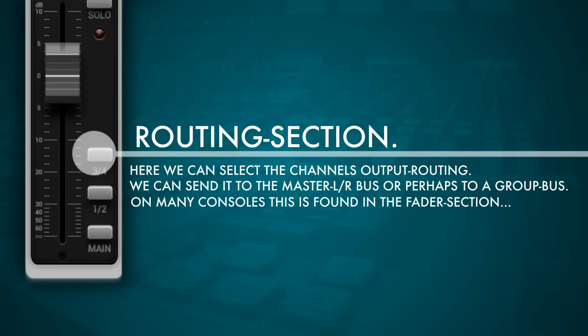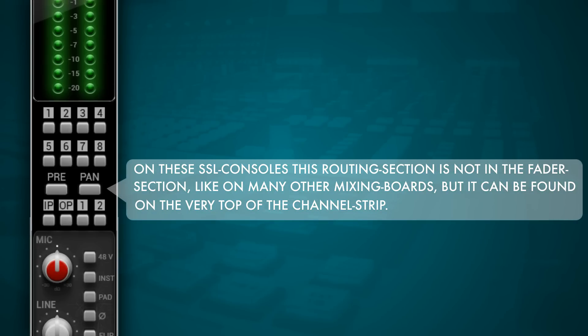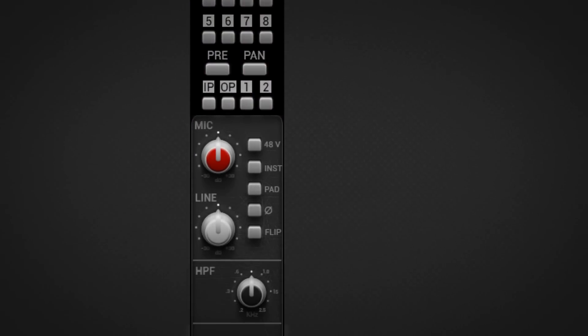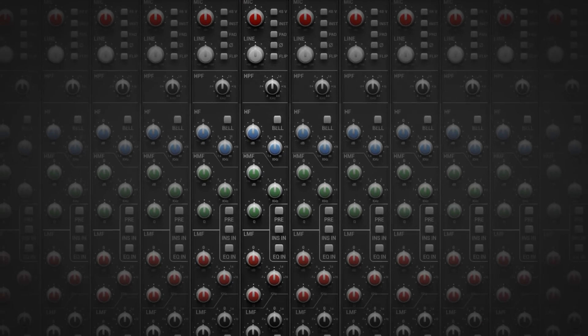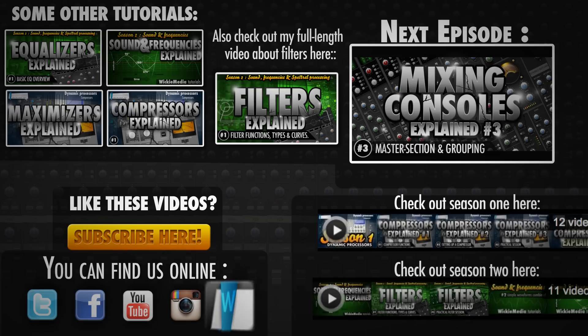In the routing section we can select which bus to send the output to after the fader — one of these being the main mix bus, which sends the output of this channel including fader and panning to the mix. On some consoles you'll also find group tracks here. On this particular SSL console, the group selection is on top of the console, but on many others it's next to the fader. Once we know one channel, we basically know all the channels — around 80% of the board. In part three of this tutorial I'll take a look at the master section and how to route group tracks.